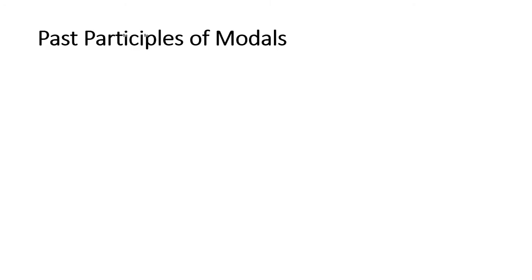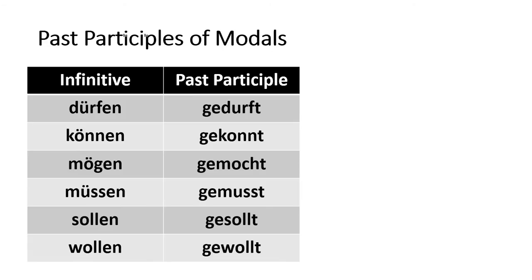One of the things you need to know for present perfect tense in German is you always need to know what the past participle is. So let's go ahead and review a little bit of past participles. Past participles of modals has nothing to do with the double infinitive construction, but it's something good to review. Dürfen — gedurft, können — gekonnt, mögen — gemocht, müssen — gemusst, sollen — gesollt, wollen — gewollt.